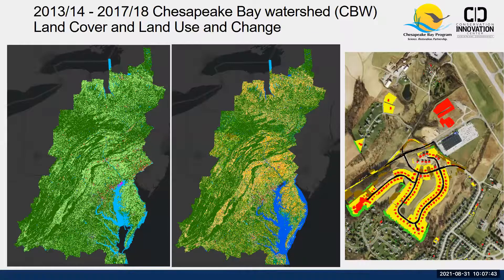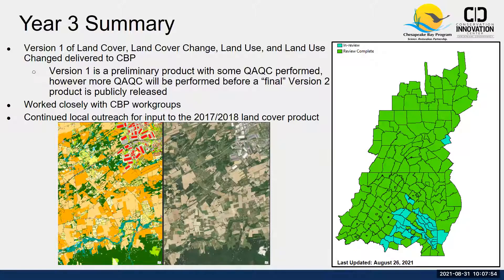Over the past year, we implemented a versioning system. Version one of the land cover, land cover change, land use, and land use change products was delivered to Chesapeake Bay Program in June. We're calling this preliminary because, while some quality control was performed, we wanted more time to fully incorporate local feedback and conduct more thorough QA/QC before public release. That final version two will be publicly released in February.